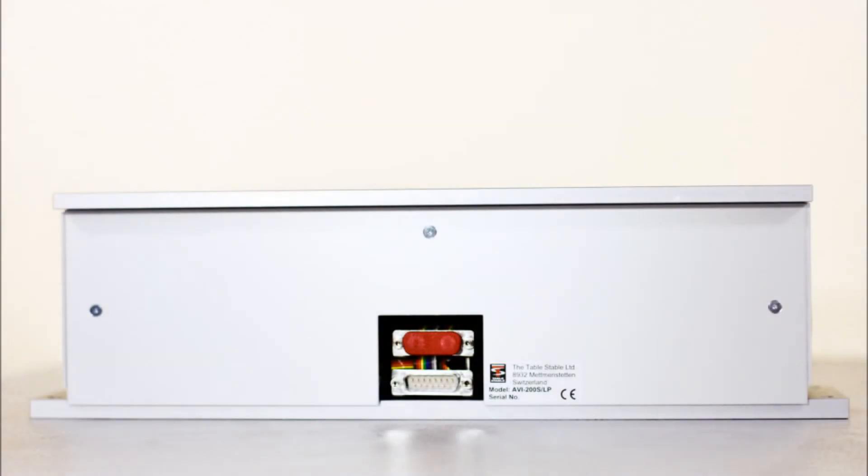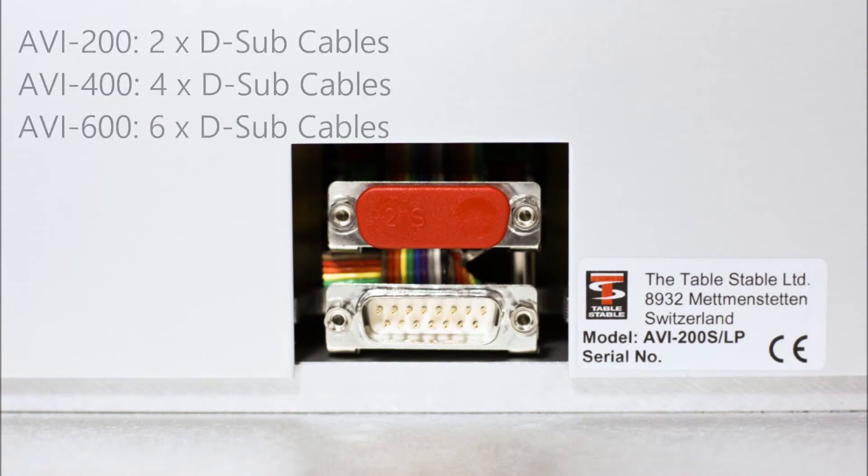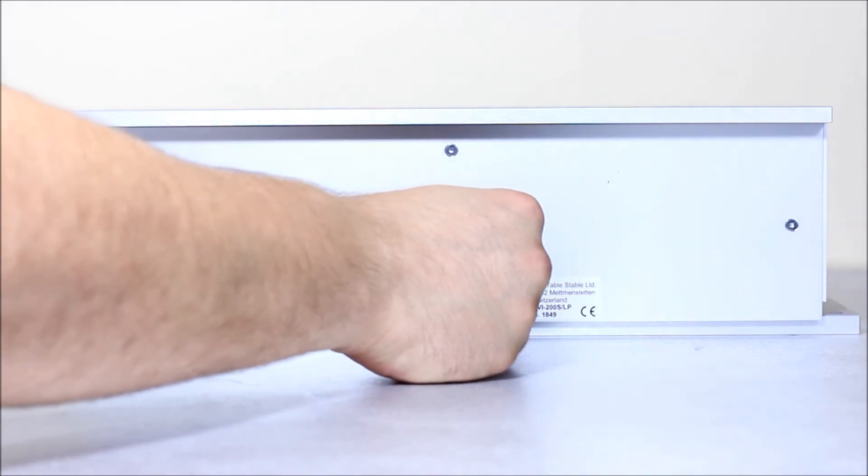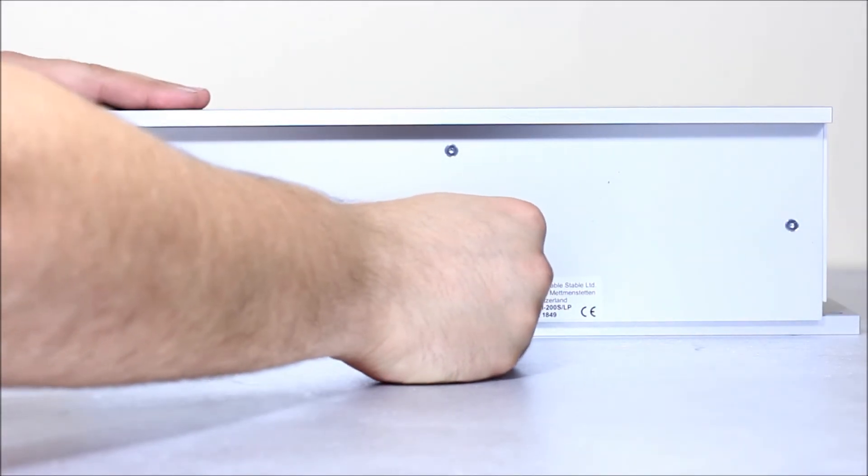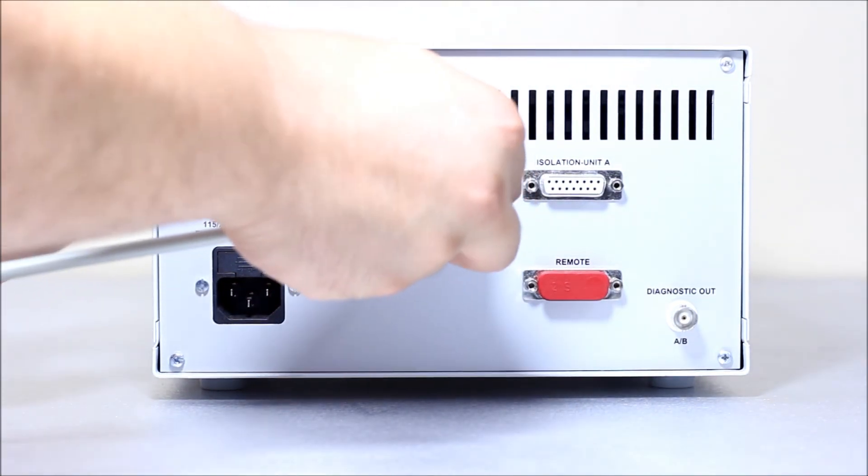Once the AVI modules have been properly adjusted to account for the instrument weight, the next step is to connect the modules to the AVI controller. Each AVI module has a specific number of D-sub cables needing to be connected to the AVI controller. Connect one end of the D-sub cable to the input found on the AVI module and the other end of the D-sub cable to the input found on the AVI controller.